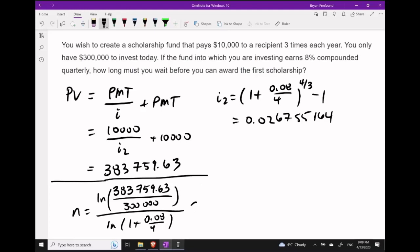Simplifying this expression, we get that N is about 12.43. So we want to round that up to 13.